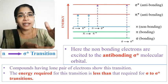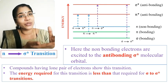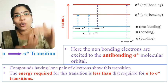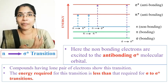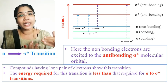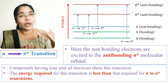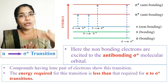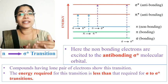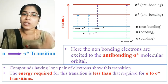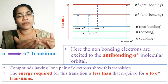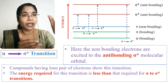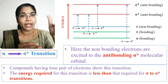To summarize: sigma to sigma star requires the highest amount of energy. Compared to that, N to sigma star transitions require less energy. Non-bonding electrons are promoted to the sigma star anti-bonding molecular orbital in this second type of transition.